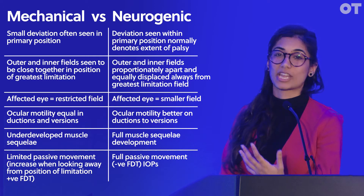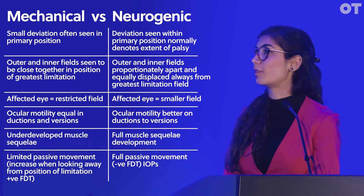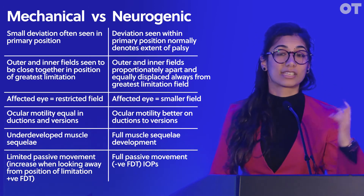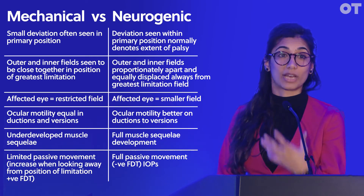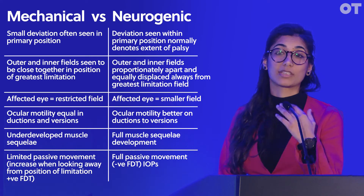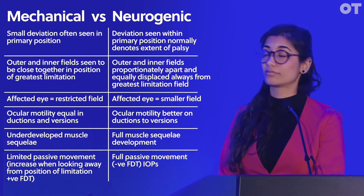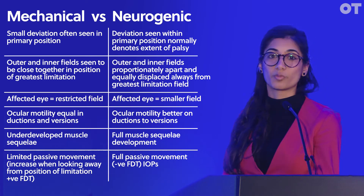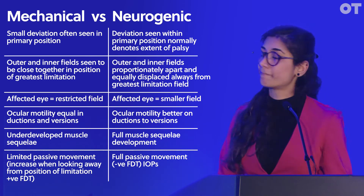Observations will tell you something too, but patients with congenital problems probably won't complain about an abnormal head posture — this discussion is really about neurogenic and mechanical palsies. The key question to have in the back of your mind is: is this something I can do something about? Do I need an urgent referral, or is it something I just review in practice because it's been there a very long time?